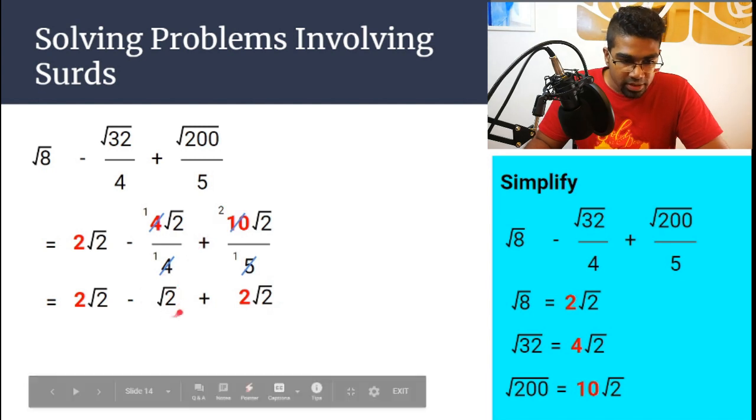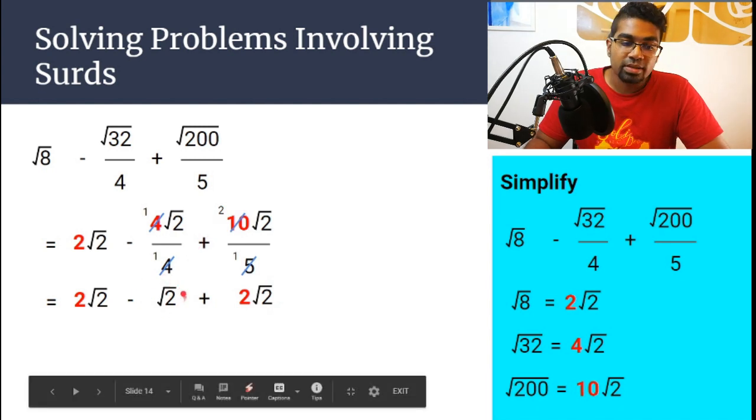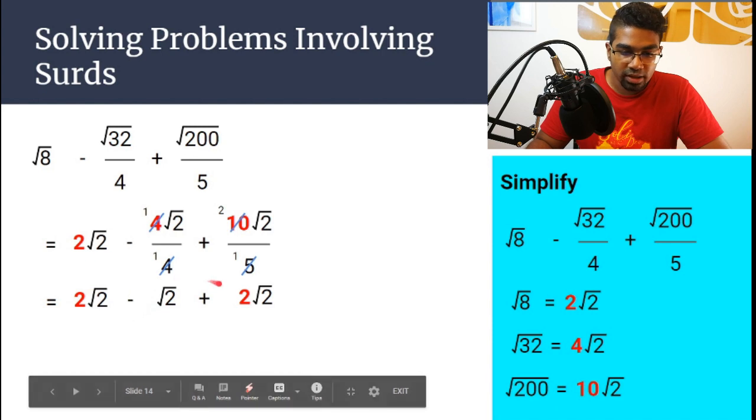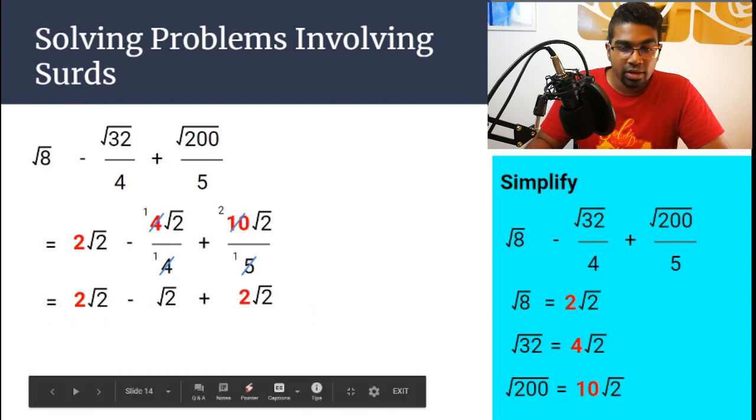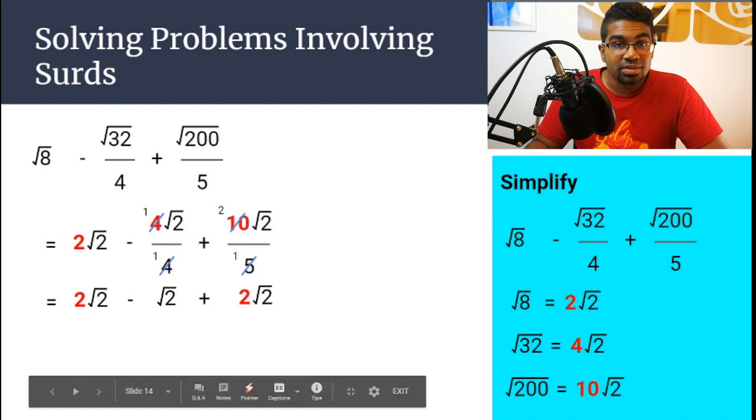So here, remember that when surd 2 is by itself, it is 1 surd 2. Don't forget there is a 1 here. We just don't write it down. But there is a 1 here. So this is 2 minus 1 plus 2. Now once we have this expression here, then we can apply another law of surds.